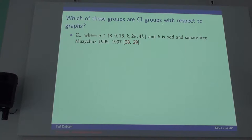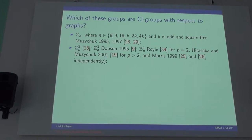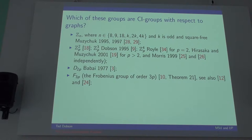There's also another big list. Which of these groups are CI groups with respect to graphs? And the graphs here is important. There's another slightly different list or slightly shorter list for digraphs. This is not something that I'm going to really want to dwell on. There's the prime p to the k, dihedral group. That's a very nice result. The non-abelian group of order 3p turns out to be CI with respect to graphs, but it's not CI with respect to digraphs. The only reason I'm going to pause on this one is you should notice the date there. It's 2015.